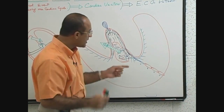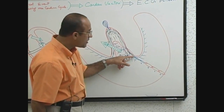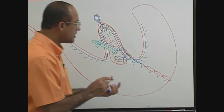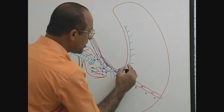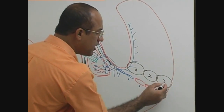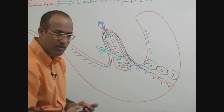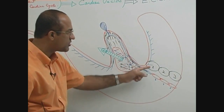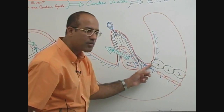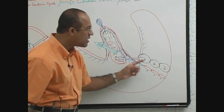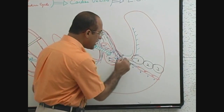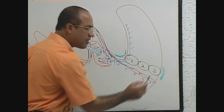A very important point: Purkinje fibers are in the deeper myocardium. The myocardium has parts — the innermost part is the inner myocardium, then the middle myocardium, then the outer myocardium. The inner layer is called subendocardial myocardium because it is just under the endocardium, and the outer layer is subpericardial myocardium because it is just under the pericardium.